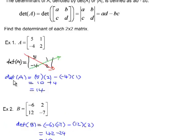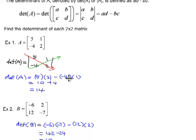Two examples coming right up. Find the determinant of each 2x2 matrix. Matrix A has entries 5 and negative 4 in the first column, 1 and 2 in the second. The determinant of A will be 5 times 2, minus negative 4 times 1. A common mistake students make is not watching for the signs, so make sure you set up the signs properly. That gives 10 plus 4, so the determinant is 14.